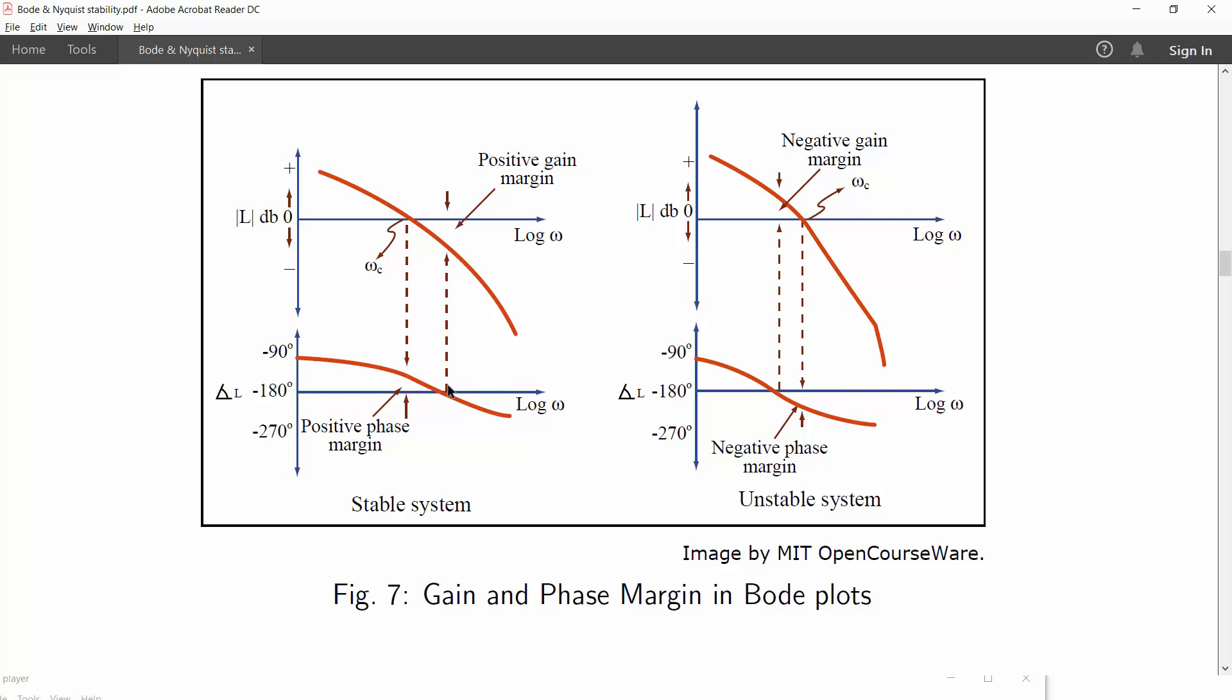Likewise, if a line is extended from Omega PC, the phase crossover frequency towards gain plot, the measure of this gap between 0 dB and the plot gives the value of gain margin.